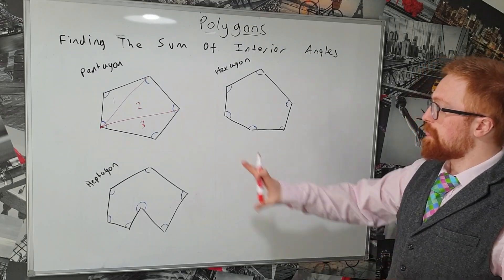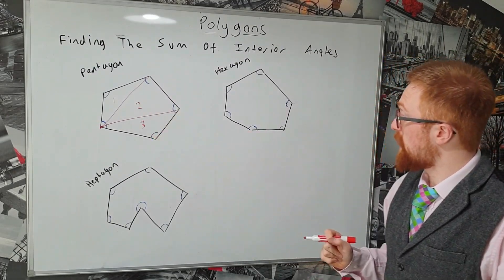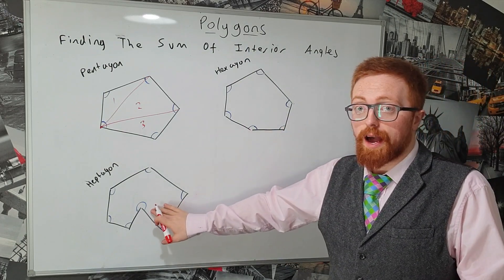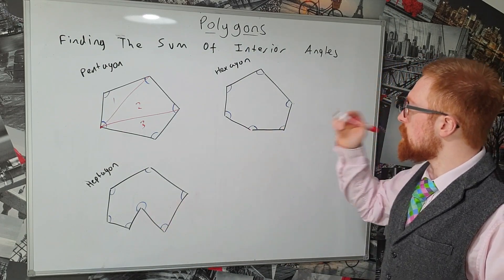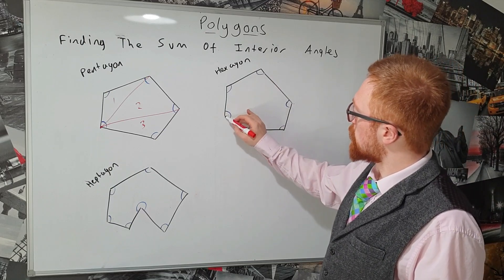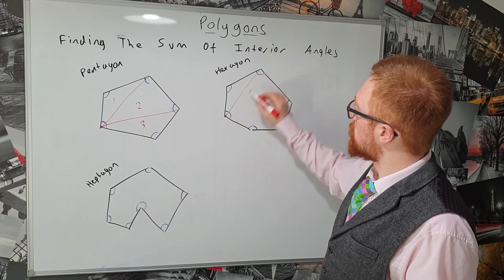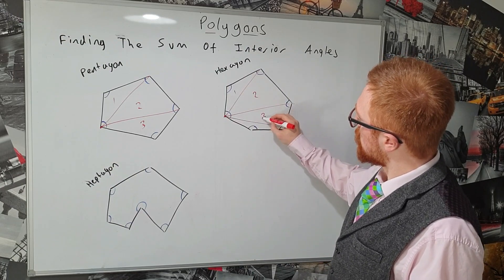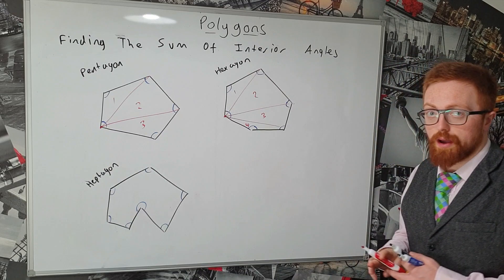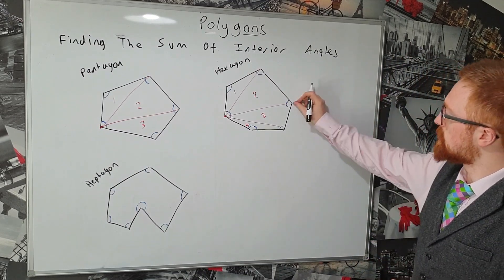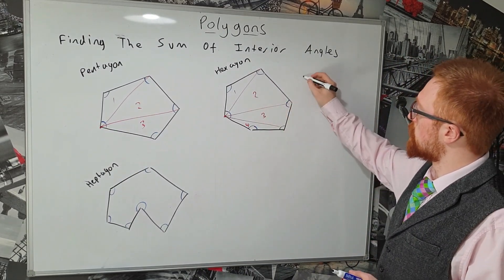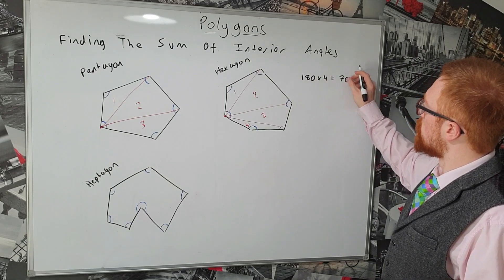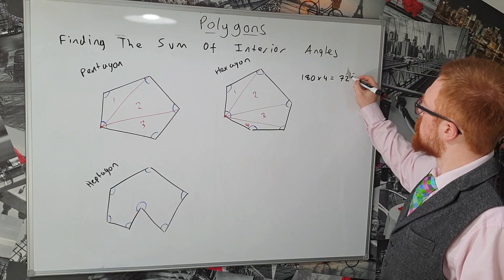Okay so we've just seen how we can work out the sum of the interior angles of a pentagon. Now let's see if we can generalize that for a hexagon. So a hexagon, again we'll pick this point here and split it into triangles. Now that gives us four triangles and so this time the sum of the interior angles is going to be 180 multiplied by 4 which is 720 degrees.